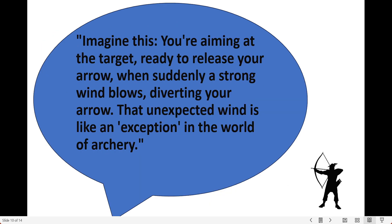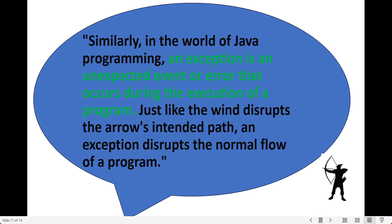Jack explained: imagine you are aiming at a target, ready to release your arrow, when suddenly a strong wind blows — it will divert your arrow. That unexpected wind is an exception in the world of archery. Similarly, in the world of Java programming, an exception is an unexpected event or error that occurs during the execution of a program. Just like the wind disrupts the arrow's intended path, an exception disrupts the normal flow of a Java program.